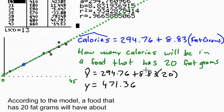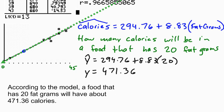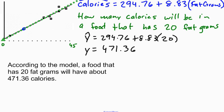What if I wanted to make a prediction about, instead of how many calories will be in a food that has 20 fat grams, let's change this and say, I want to make a prediction, how many calories will be in a food that has maybe 100 fat grams. So what do I do now?